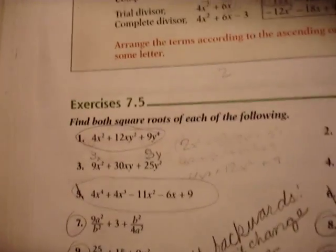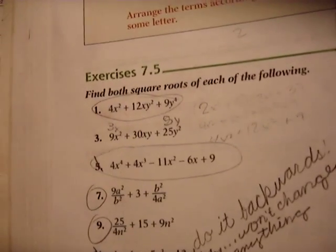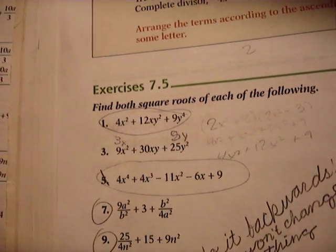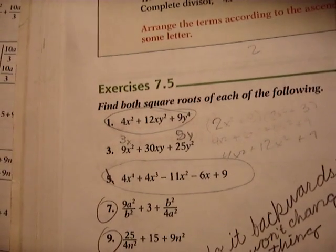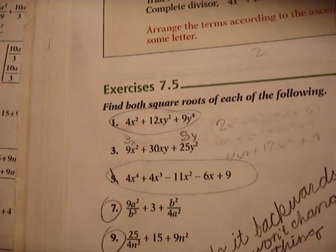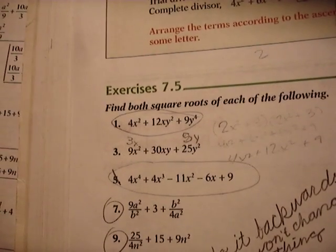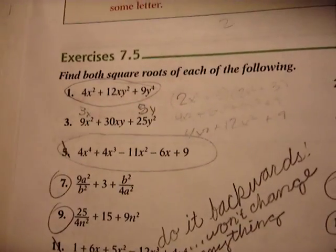Okay, we're just going to start with doing a problem. Let's write down problem number one. 4x squared plus 12xy squared plus 9y to the fourth.